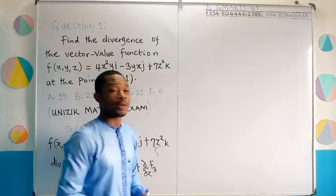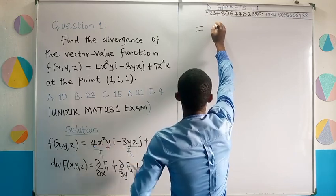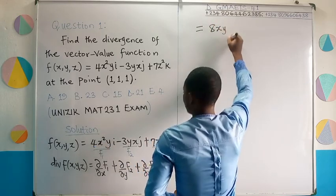When doing this, 4y will be kept constant. This is going to give us 8x. Differentiate this x. This is going to give us 8xy. Good.